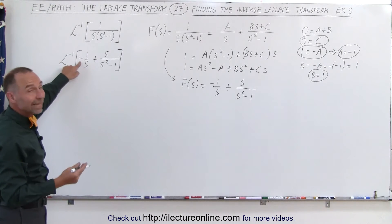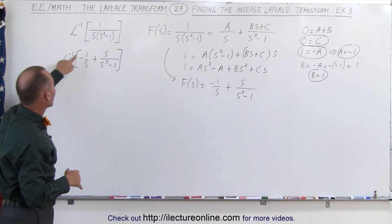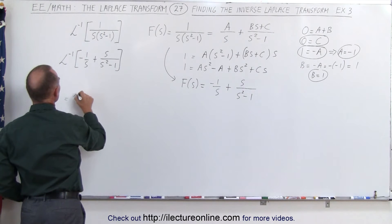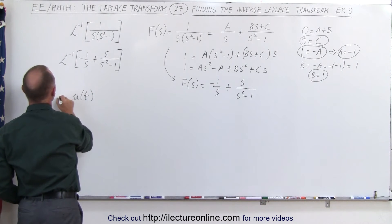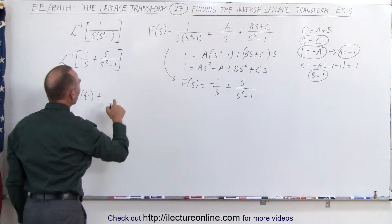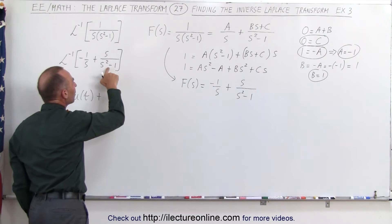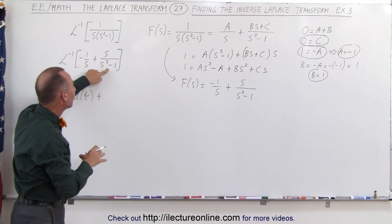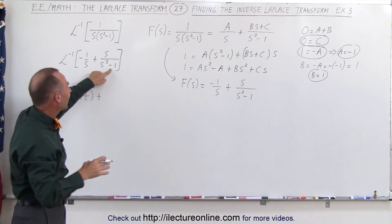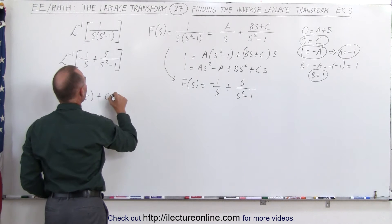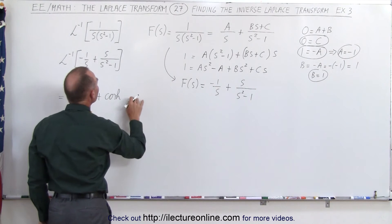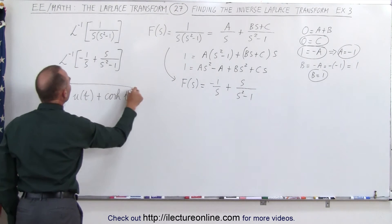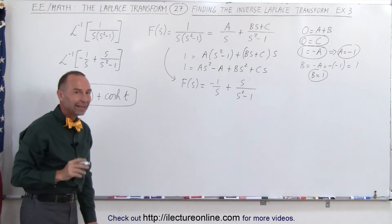For the first term, we take the minus out and the inverse transform of 1 over s is simply the unit step function, so this gives minus u(t). For the second term, if it were s over s squared plus 1, the inverse Laplace transform would be cosine of ω·t. But with minus 1 instead of plus 1, it's the hyperbolic cosine. So this becomes the hyperbolic cosine of ω·t, with ω equal to 1, giving simply cosh(t). This is the inverse Laplace transform of the original equation.